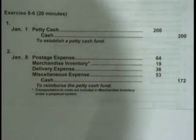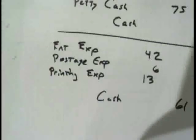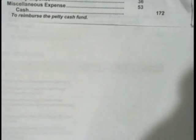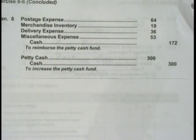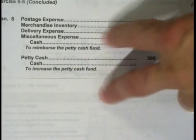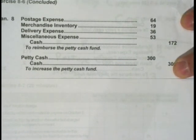For Part 3 — reimburse and increase the fund to $500: the reimbursement journal entry stays the same. The fund was originally $200 and we're increasing it to $500, so we need to debit petty cash for $300 and credit cash for $300. You could combine these two entries, but I'd advise doing them as two separate entries to avoid confusion.